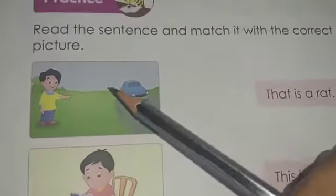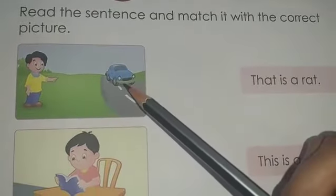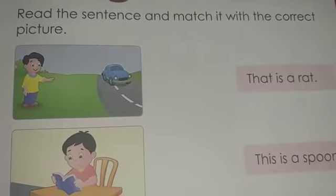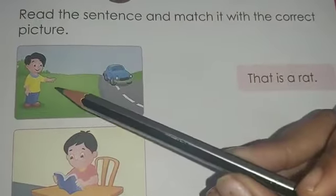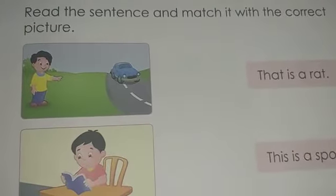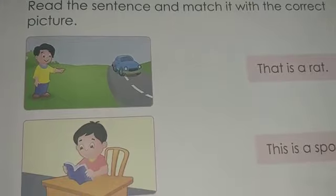Let's begin. There is a boy and you can see a car passing by. The car is a little far off from the boy, so what will the boy say? 'That is a car.' You can see 'That is a car' is written there, so you will match the picture with that sentence.